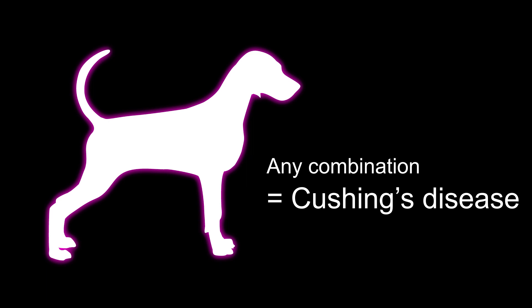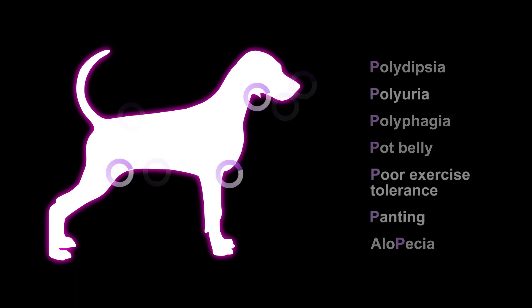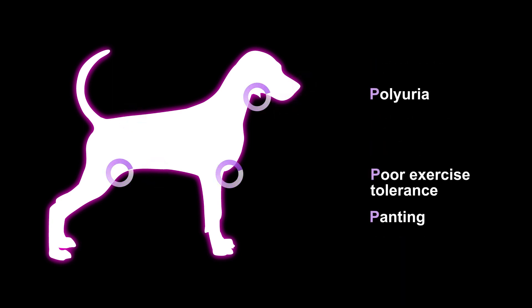As dogs are often diagnosed at the early stages of the disease, they may not display all the P signs together. Any combination of symptoms could indicate Cushing's disease.